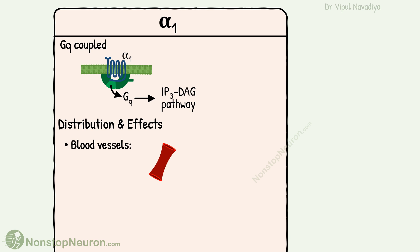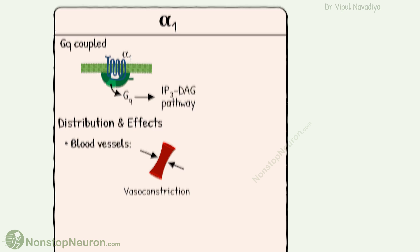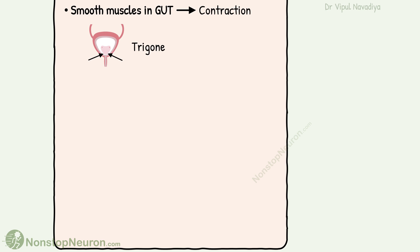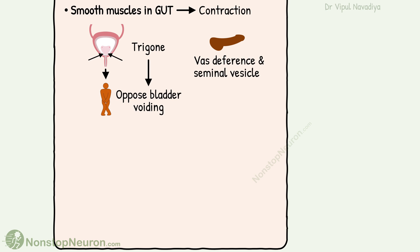Alpha-1 receptors are found in blood vessels, where they cause vasoconstriction. They are also seen in certain smooth muscles in the genitourinary tract, where they cause contraction — like contraction of trigone muscles, which opposes the voiding of the bladder, and rhythmic contraction of vas deferens and seminal vesicle, which contribute to ejaculation. They are also found in glands, where they cause secretion.